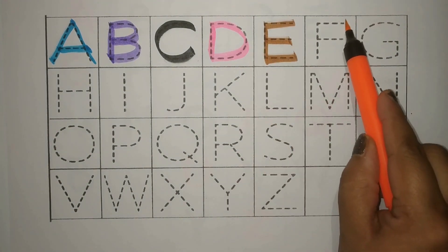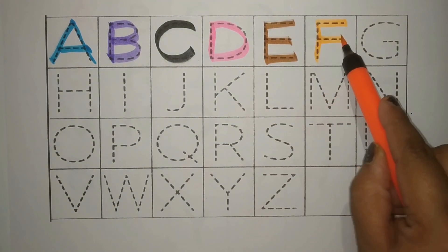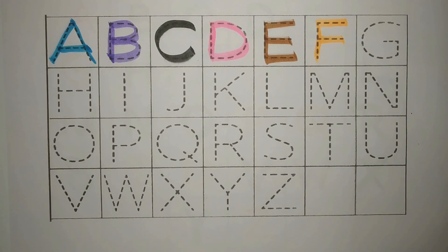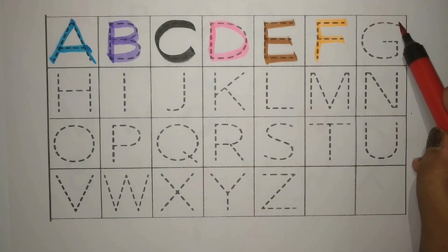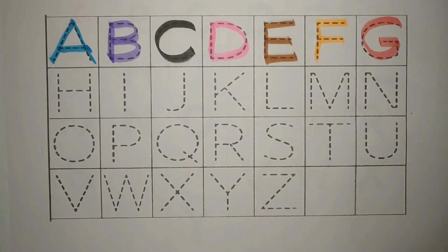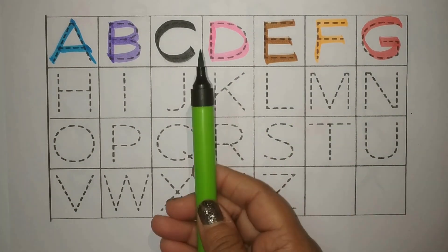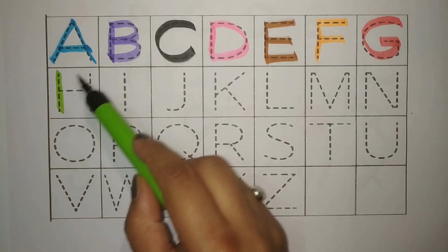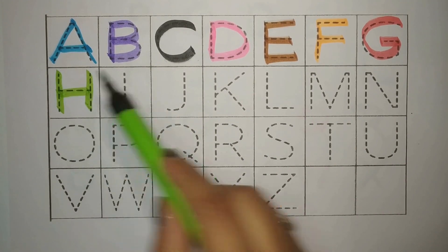Orange F for Frog, Mane Dug. Red G for Grass, Ghass. Green H for House, Ghur.